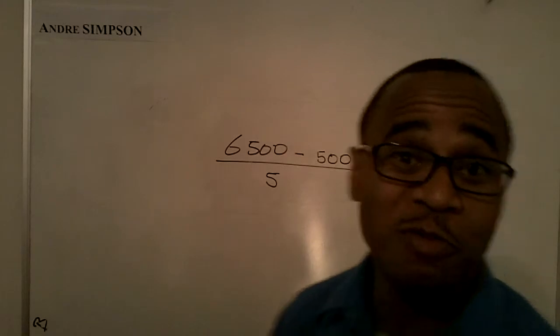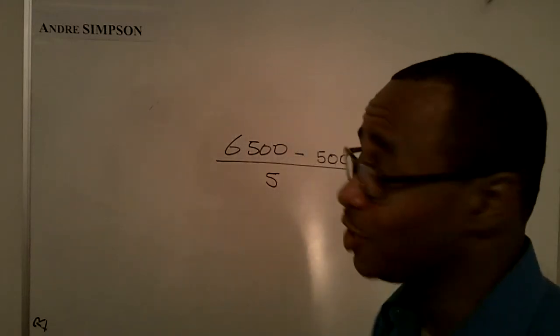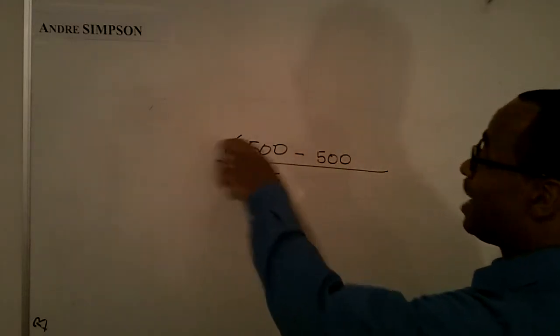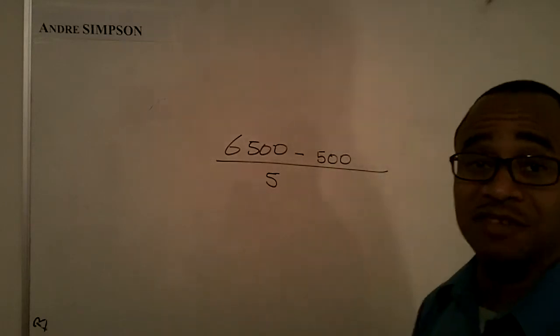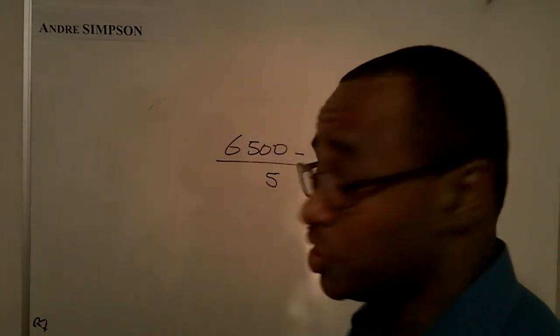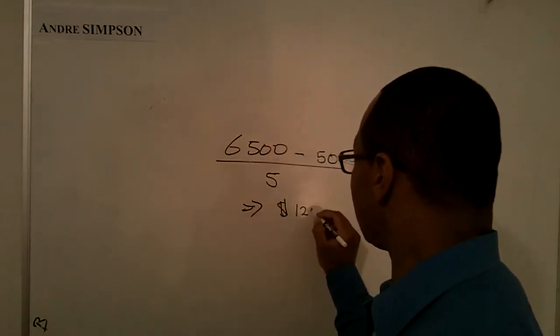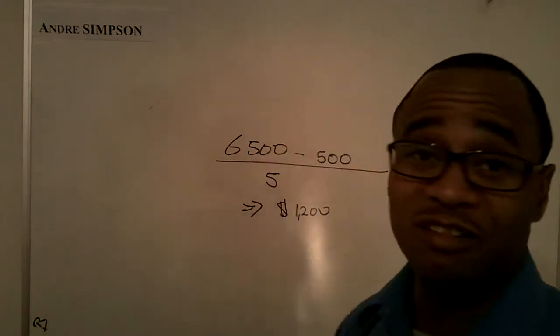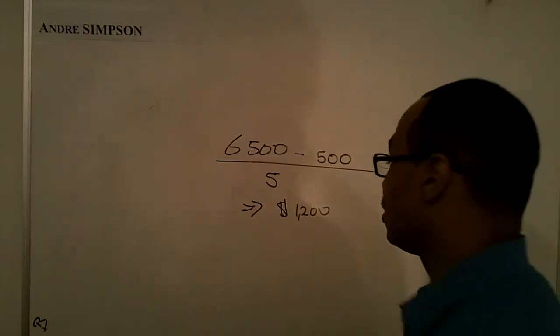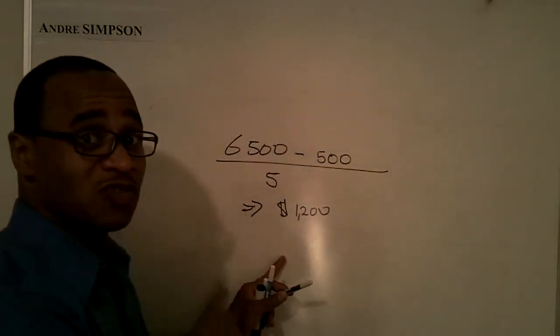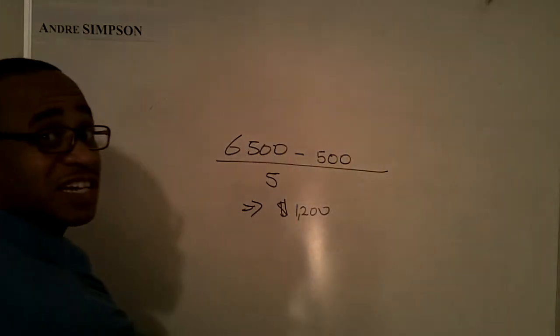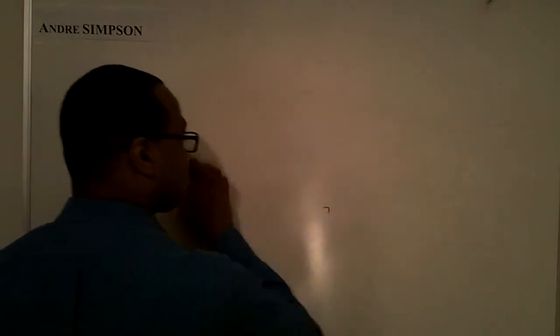So, the formula I'm going to give it to you now is cost minus salvage value divided by useful life. Having done that, we should arrive at $1,200 per year for depreciation expense. Now, if this is $1,200 per year for your depreciation expense, here is how you're going to handle that.